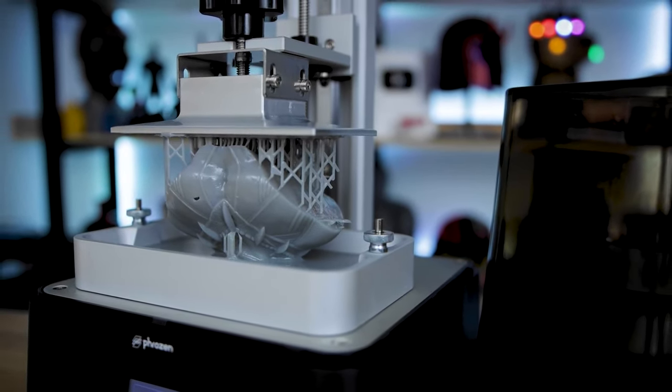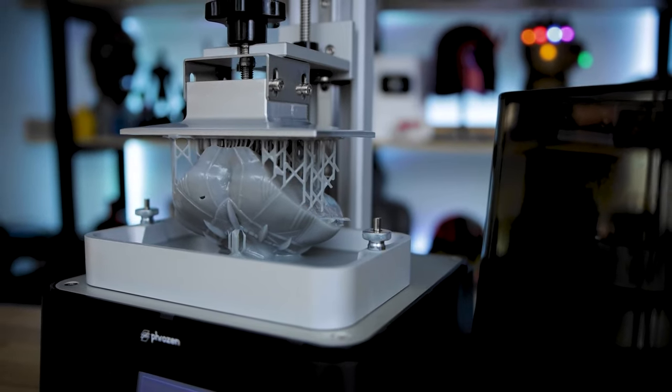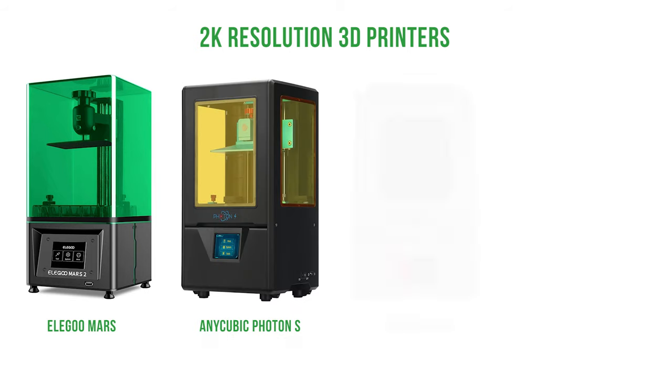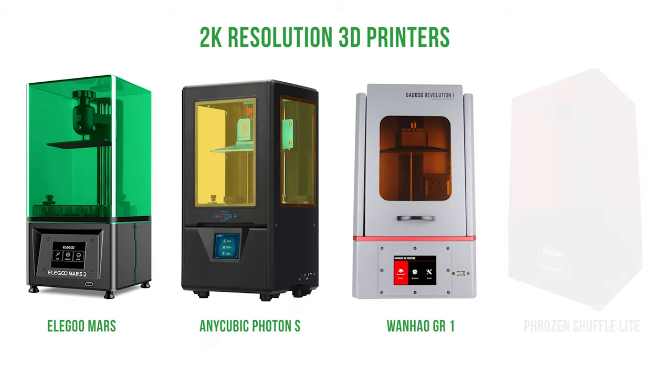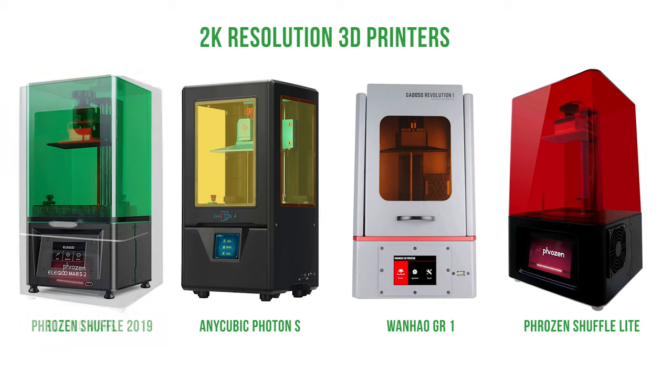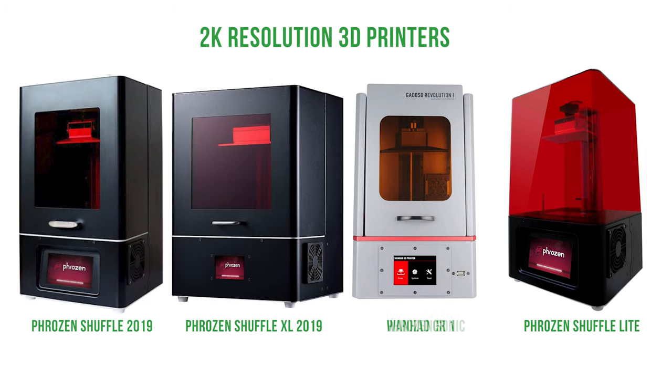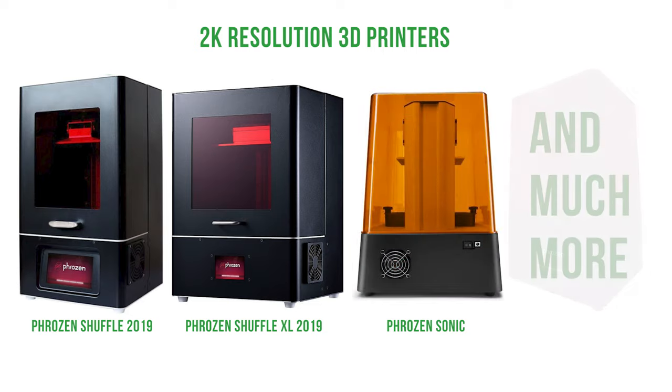Today, LCD printers surpass both DLP and SLA in terms of print speed and minimum layer thickness. Some good examples of printers with 2K resolution include the Elegoo Mars, Anycubic Photon S, Wanhao GR1, Phrozen Shuffle Lite, Phrozen Shuffle 2019, Phrozen Shuffle XL 2019, Phrozen Sonic and more.